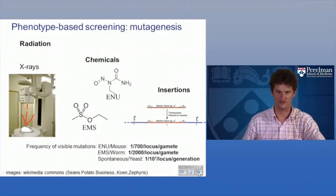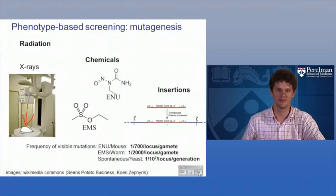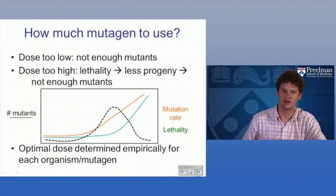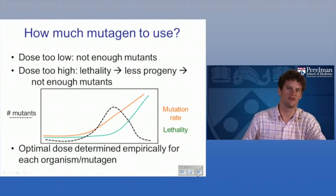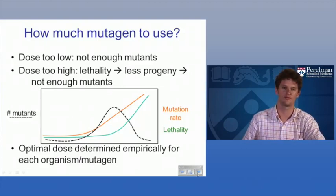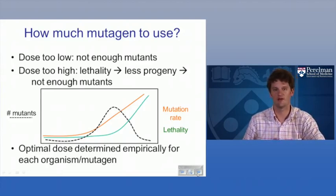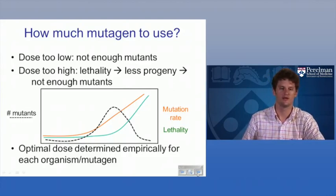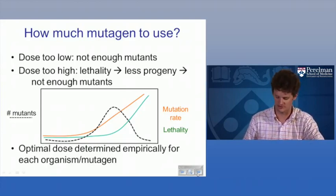The advantage of these mutagenesis methods is the much higher rate. In mouse it's astonishing — you can get a one-in-700 mutation rate per gamete per locus. A key feature is working out the actual dose empirically: too low a dose means not enough mutants, but too much dose makes the chemicals toxic, and you also won't get enough animals out of it. For well-studied systems, optimal dose has been determined; for new model systems, you must work this out each time.